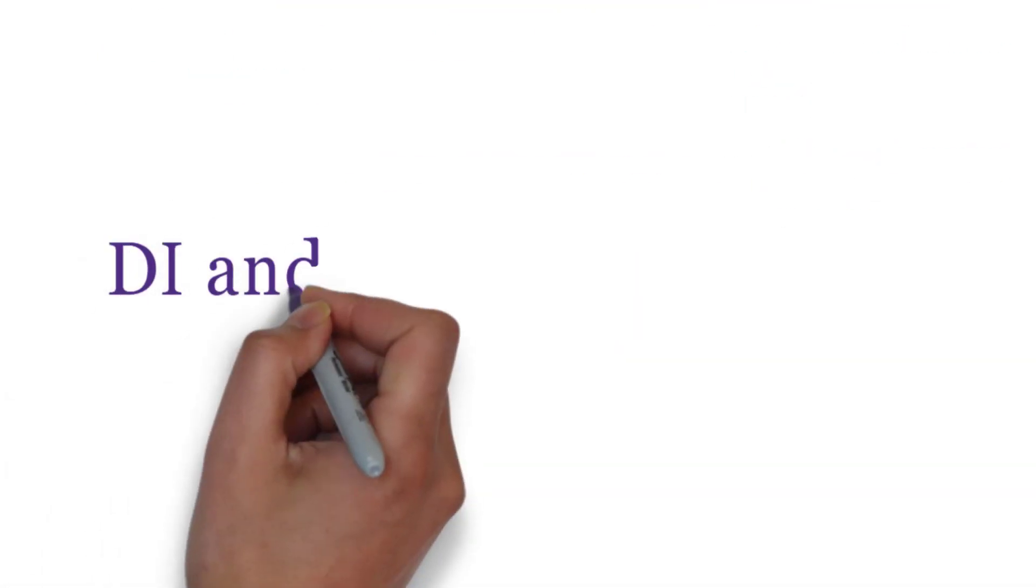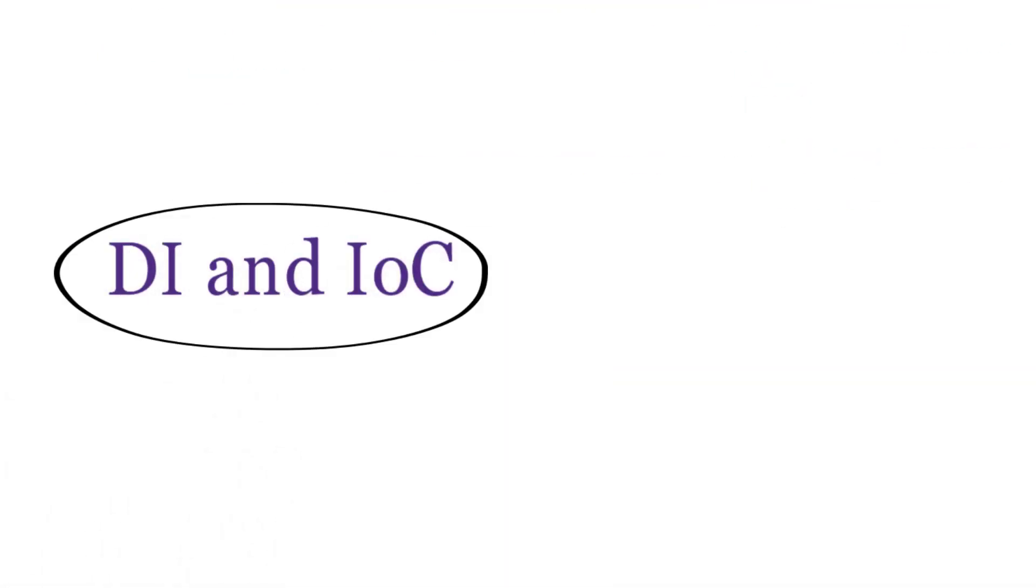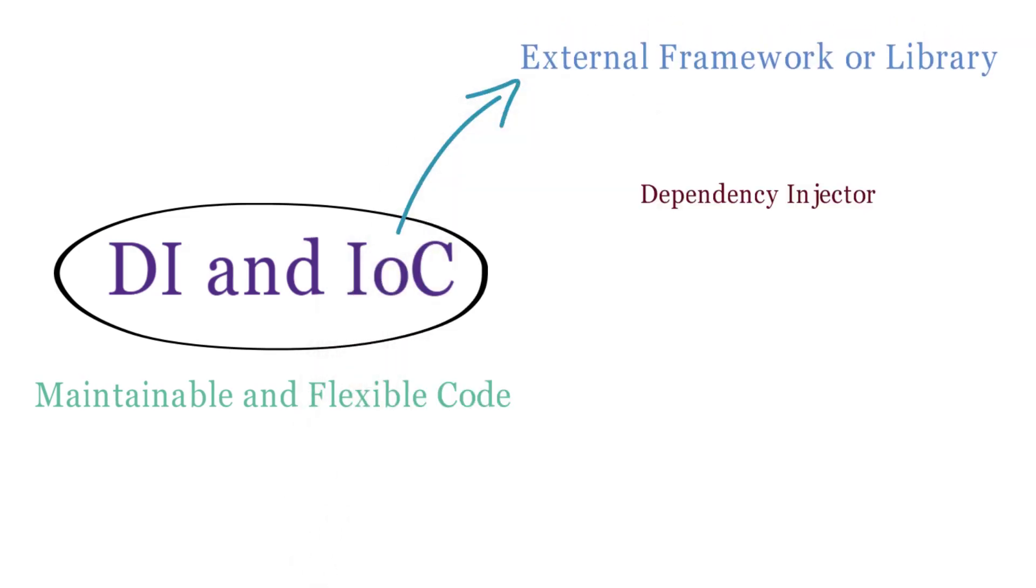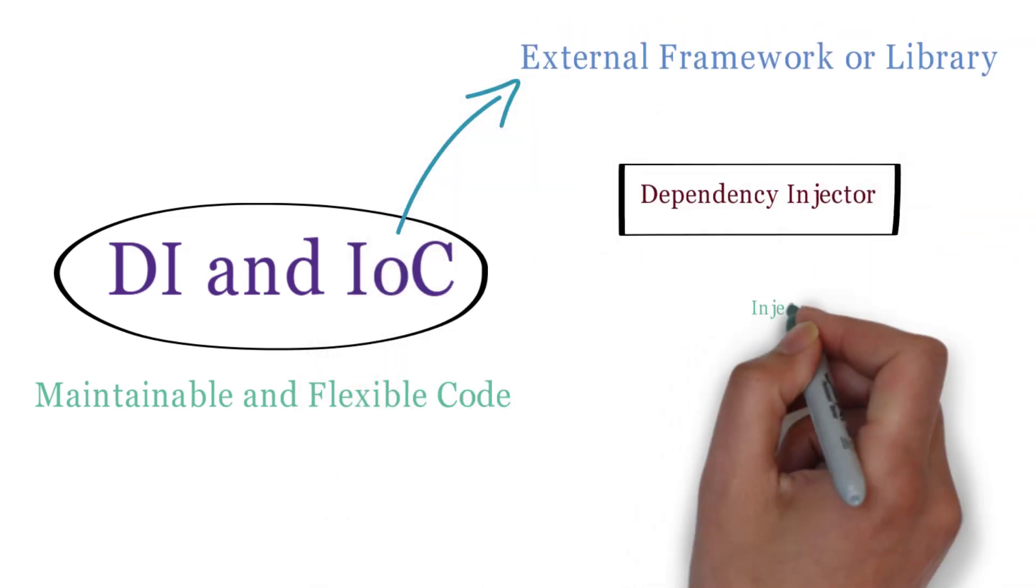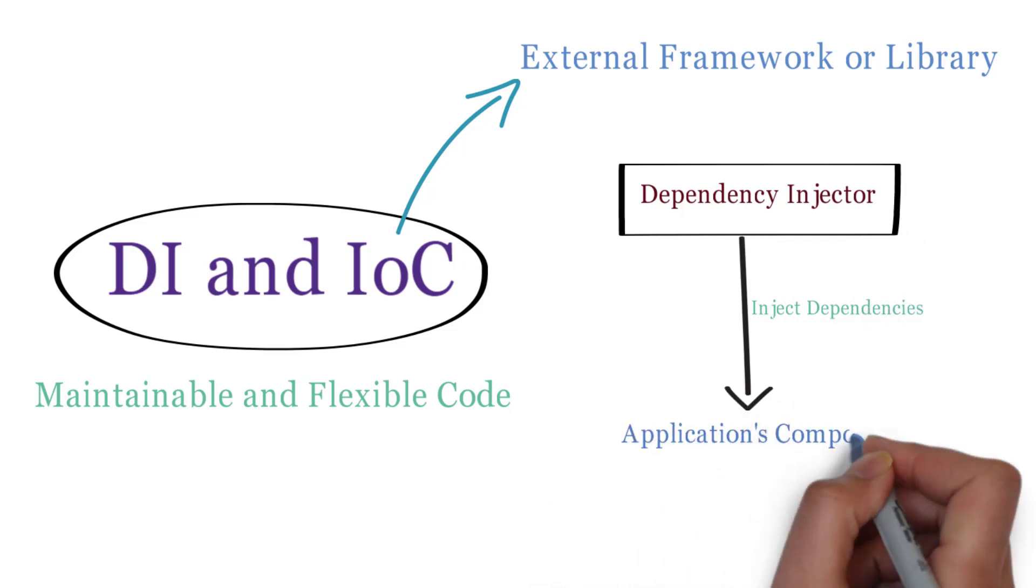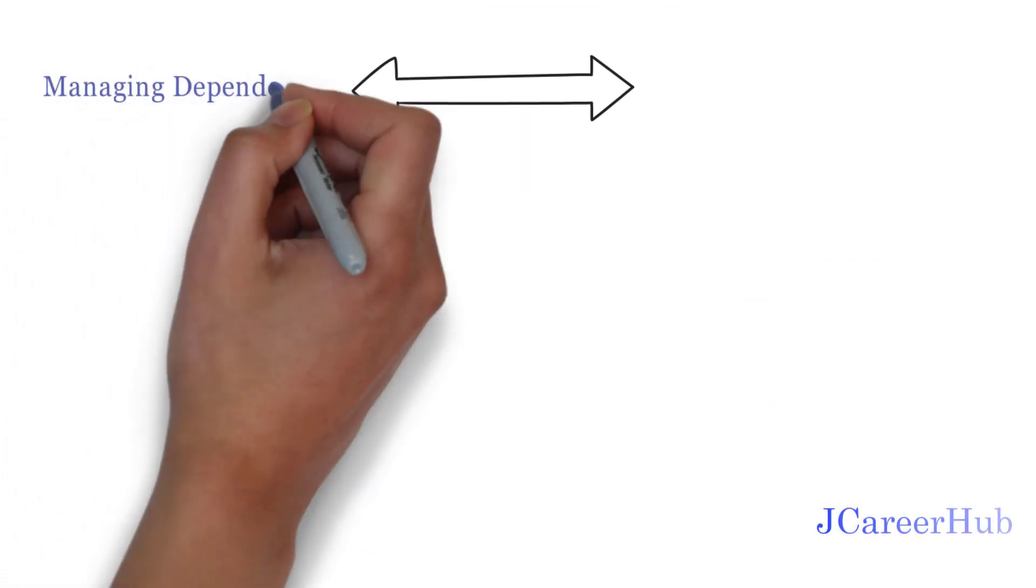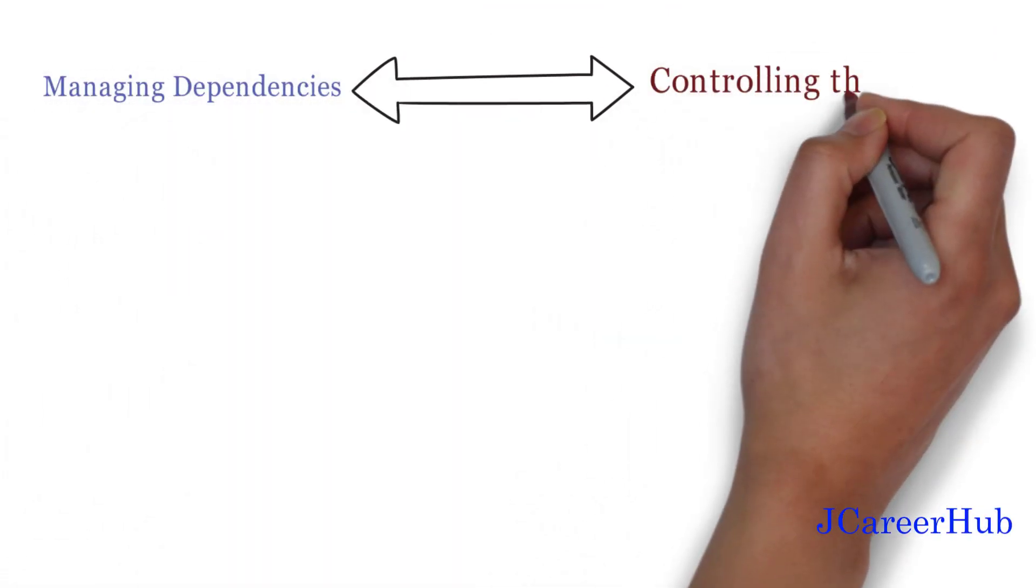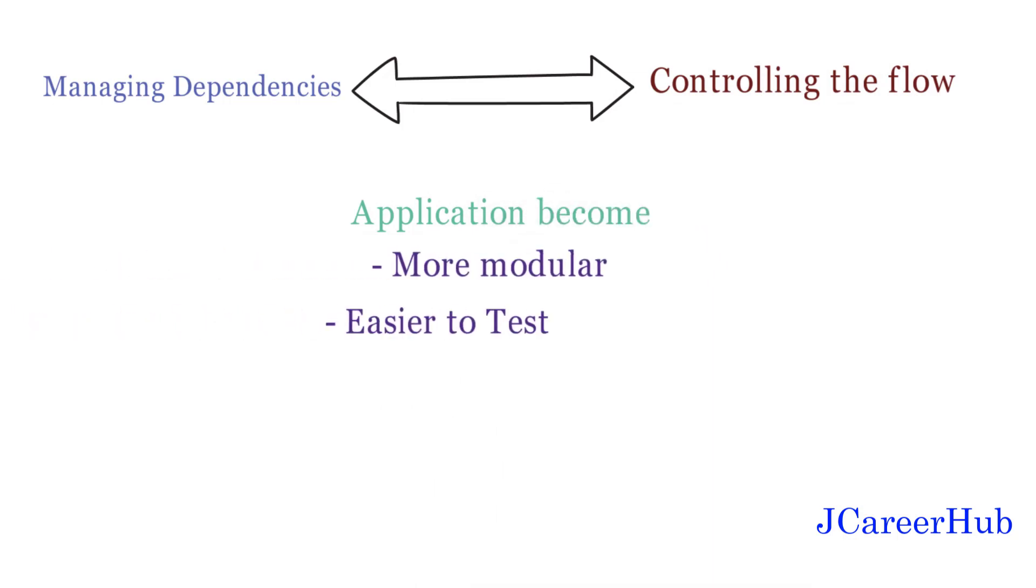DI and IOC are often used together to create more maintainable and flexible code. The external framework or library used in IOC provides the dependency injector, which is used to inject necessary dependencies into the application components. By separating the concern of managing dependencies and controlling the flow of application, the application can become more modular, easier to test and simpler to maintain over time.